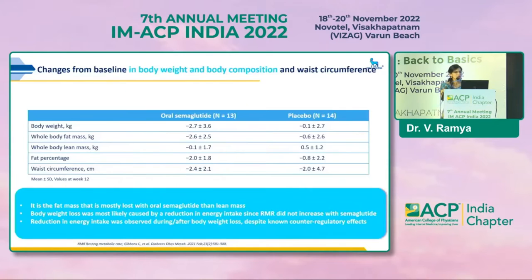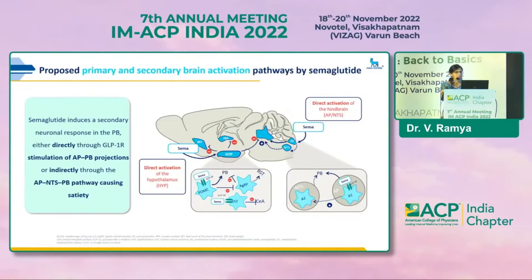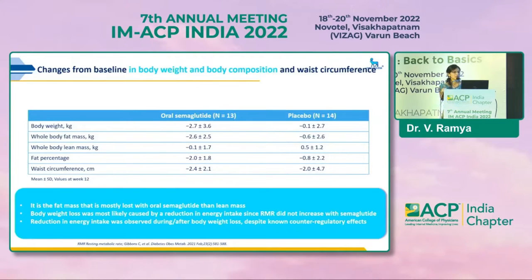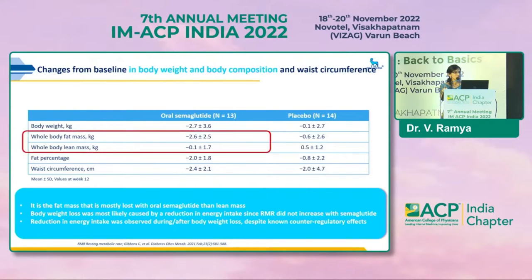The mechanism of action is shown at the level of the hypothalamus — it acts directly at the area postrema and parabrachial nucleus projections, and indirectly via the area postrema and NTS pathway, causing satiety. An important point: it is adipose tissue that is preferentially lost with semaglutide. The decrease in body weight is mainly due to fat mass — more than 2.6 kg — whereas lean mass decreased by only 1 kg. The total decrease in body weight is due to decreased intake as resting metabolic rate is preserved.